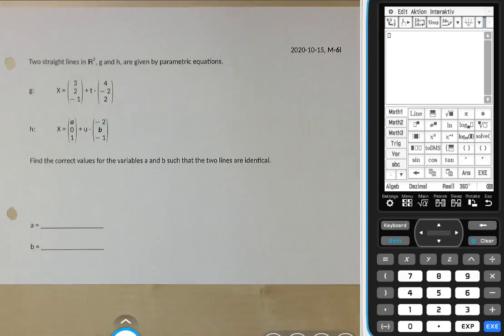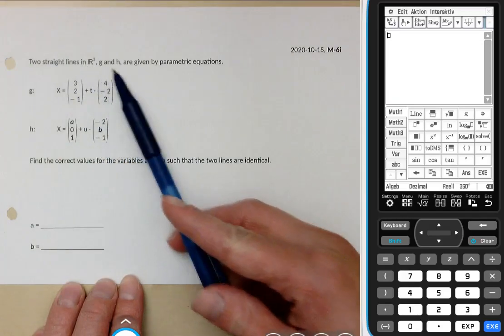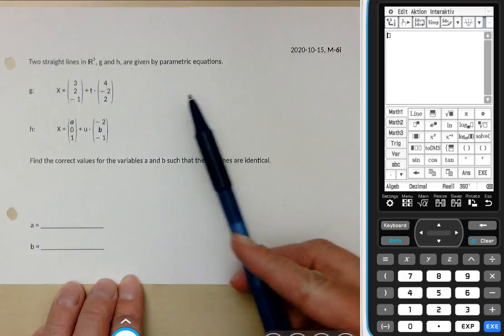Hi everyone! This is how to solve our revision quiz from last week. You had two straight lines in three-dimensional space g and h. They're given by the parametric equations.